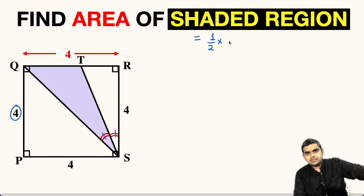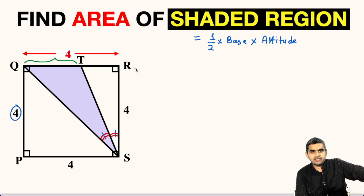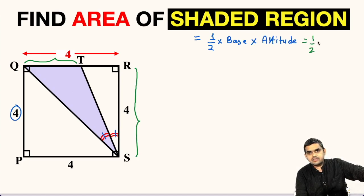In our case, we can take QT as the base and the altitude to this triangle will be RS. So we write: Area = ½ × QT × RS.